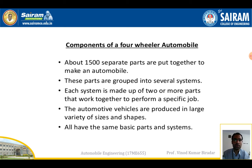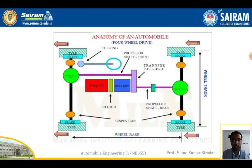These parts are grouped into several systems; each system is made up of two or more parts that work together to perform a specific job. Automotive vehicles are produced in a large variety of sizes and shapes, all having some basic parts and systems working in different fashions. In the layout of a four-wheel automobile: there are four tires, an engine, a gearbox — with a clutch fixed between the engine and gearbox — and a long shaft called the propeller shaft. Suspension and brake systems are placed near the wheels.